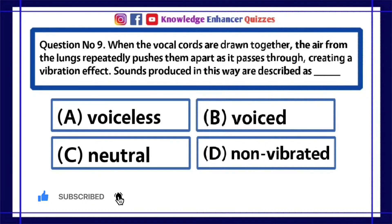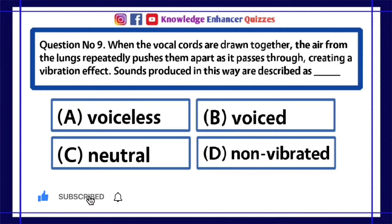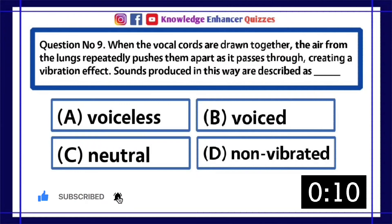Question number 9. When the vocal cords are drawn together, the air from the lungs repeatedly pushes them apart as it passes through, creating a vibration effect. Sounds produced in this way are described as dash. A. Voiceless. B. Voiced. C. Neutral. D. Non-vibrated.